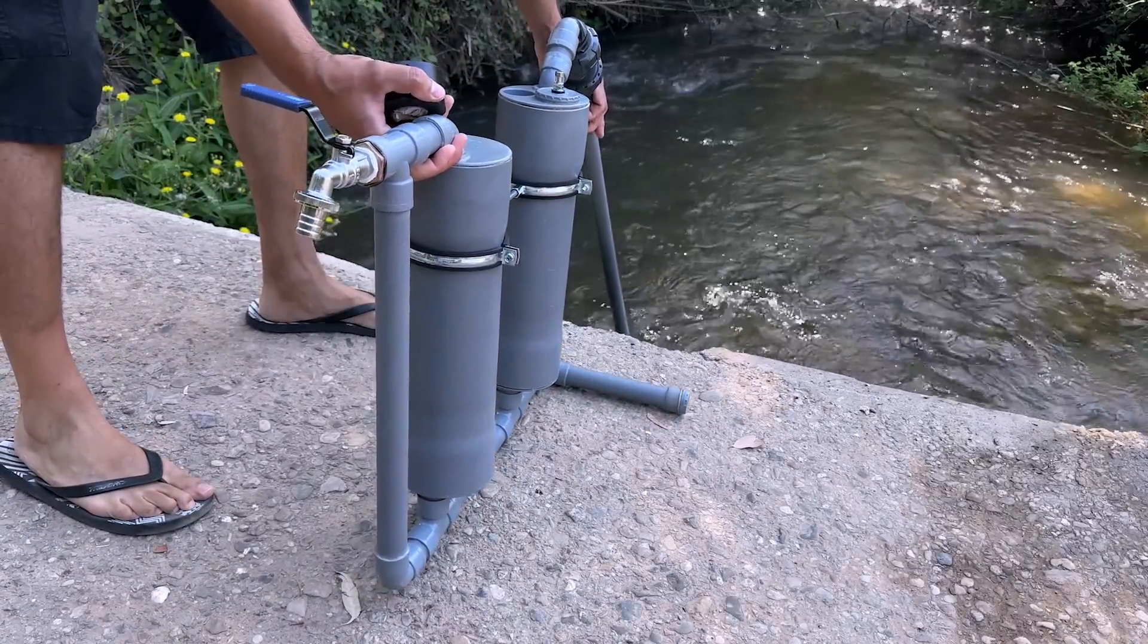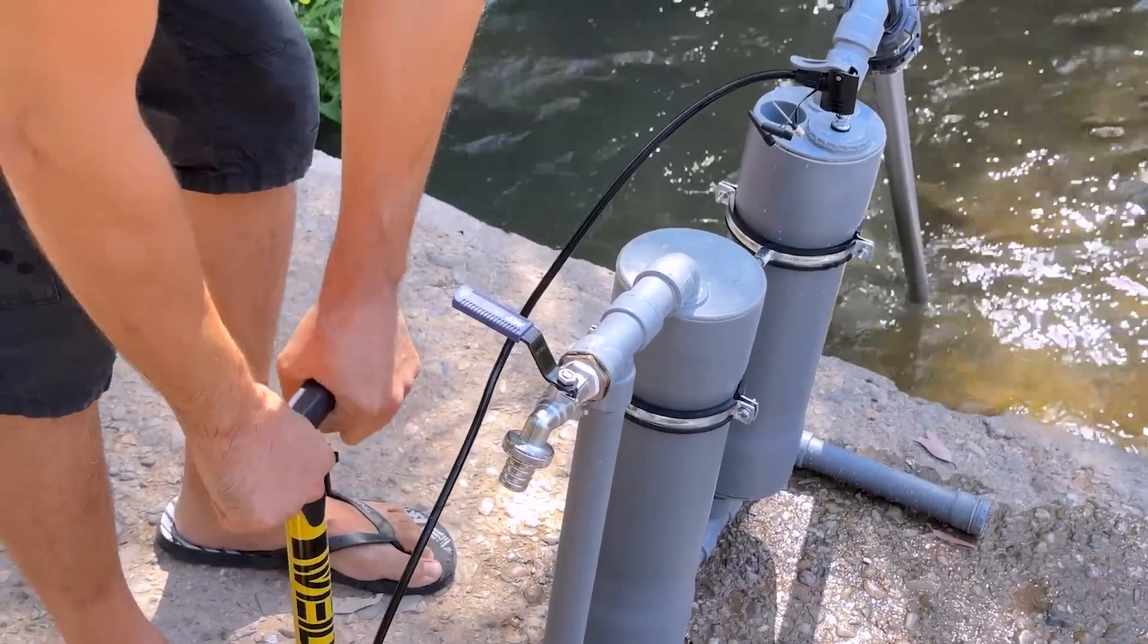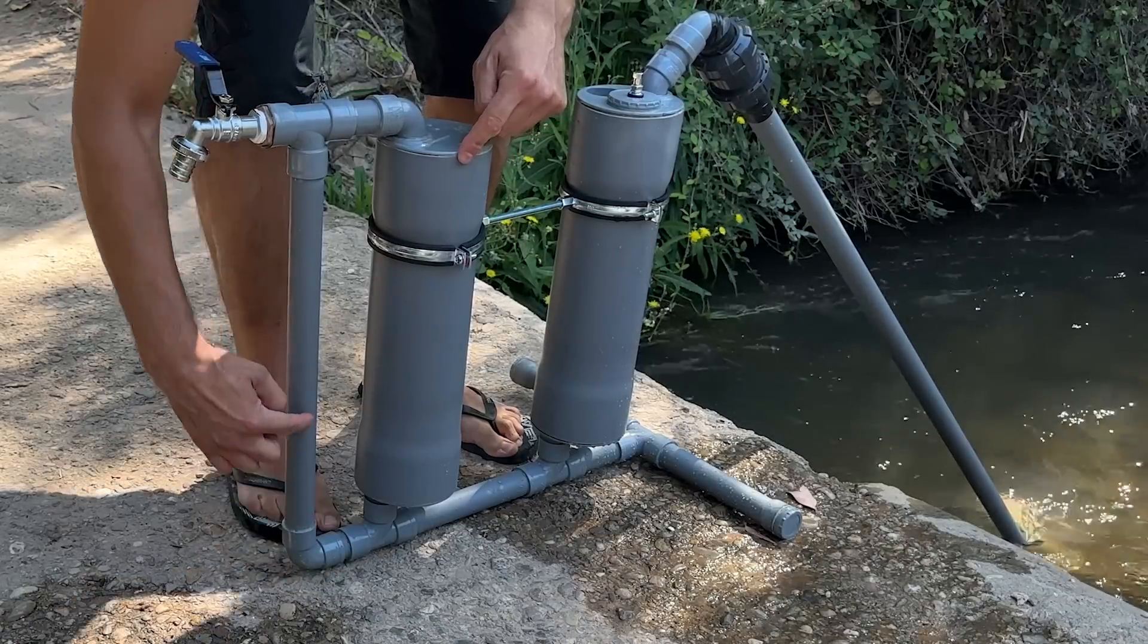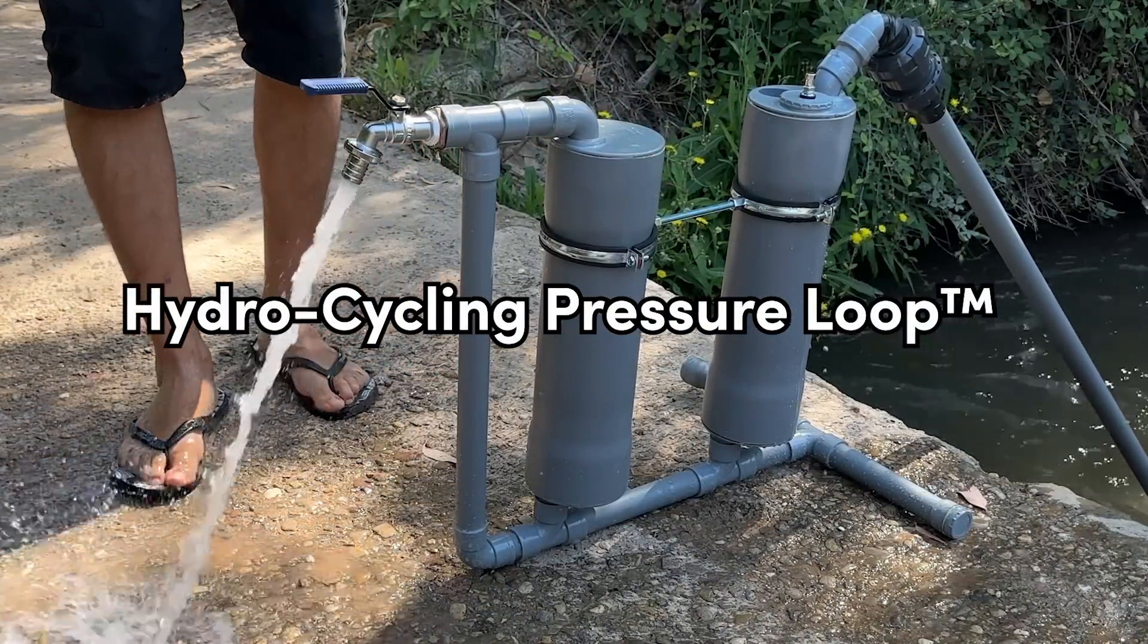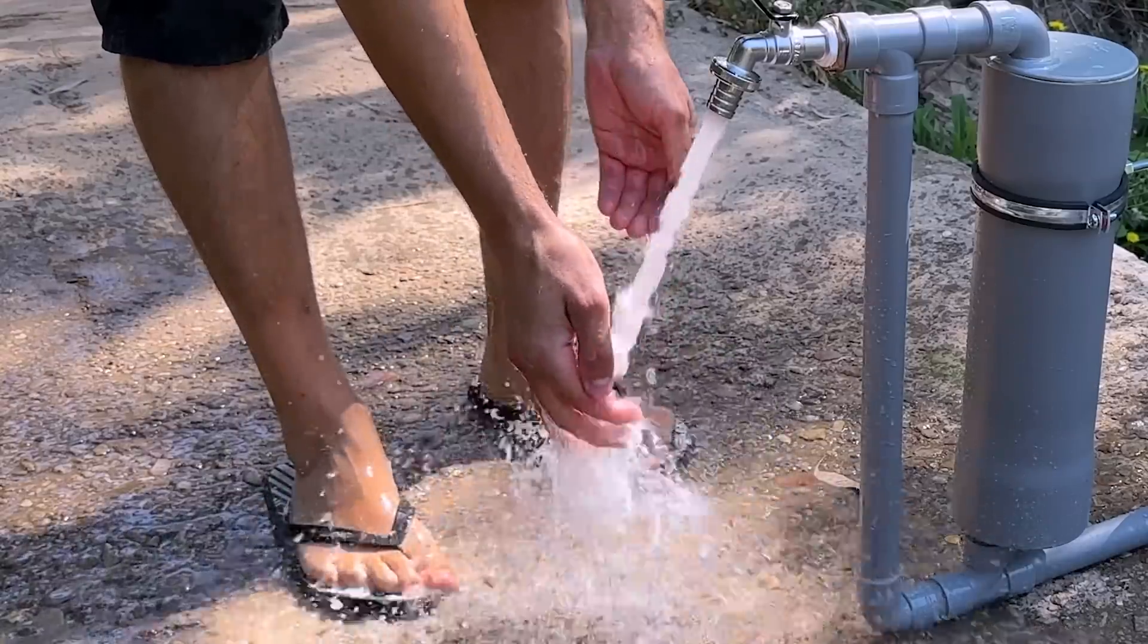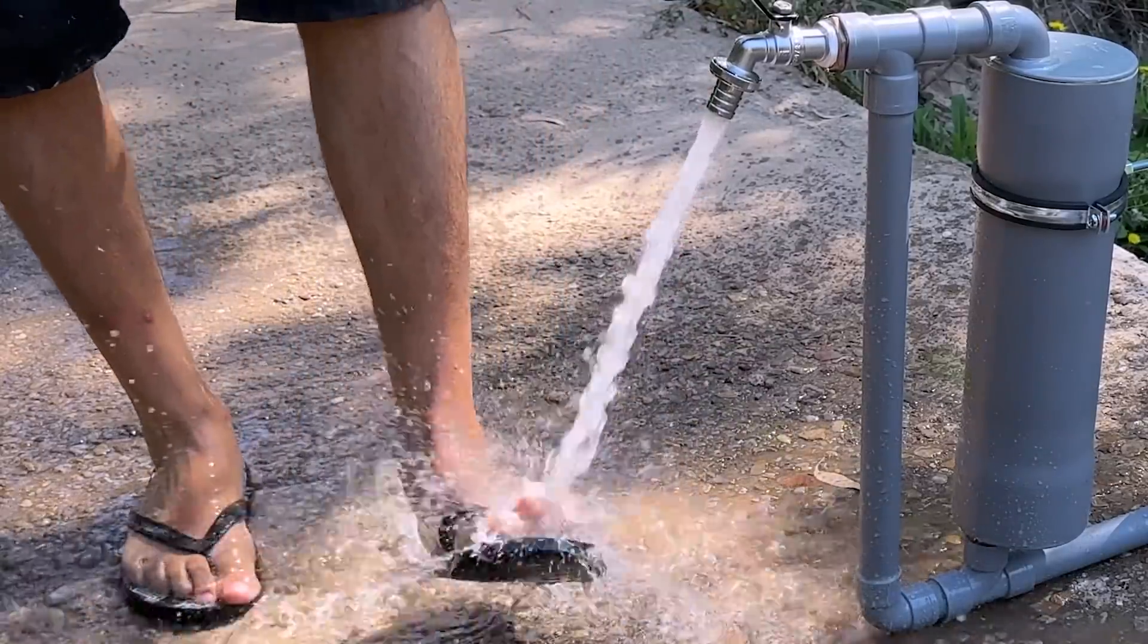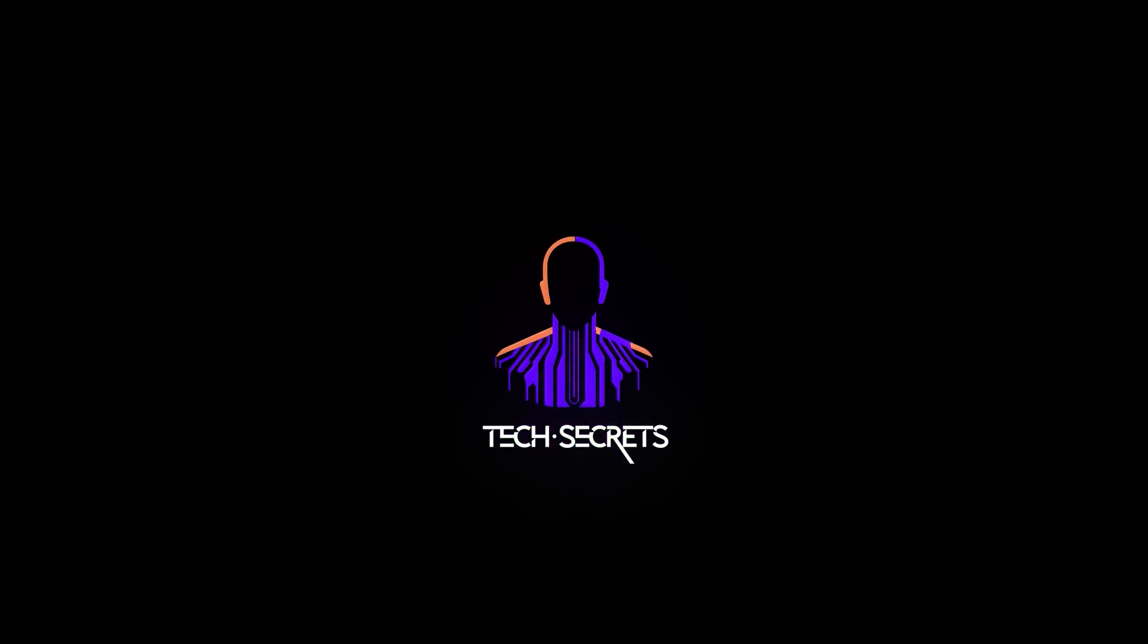In a global context where access to water and energy efficiency are more necessary than ever, a concept is born that challenges traditional solutions. Introducing the hydrocycling pressure loop, a self-sustaining hydraulic pumping system that leverages physics in an intelligent and surprising way. Stay until the end of the video to see how we made this water pump that works without electricity.